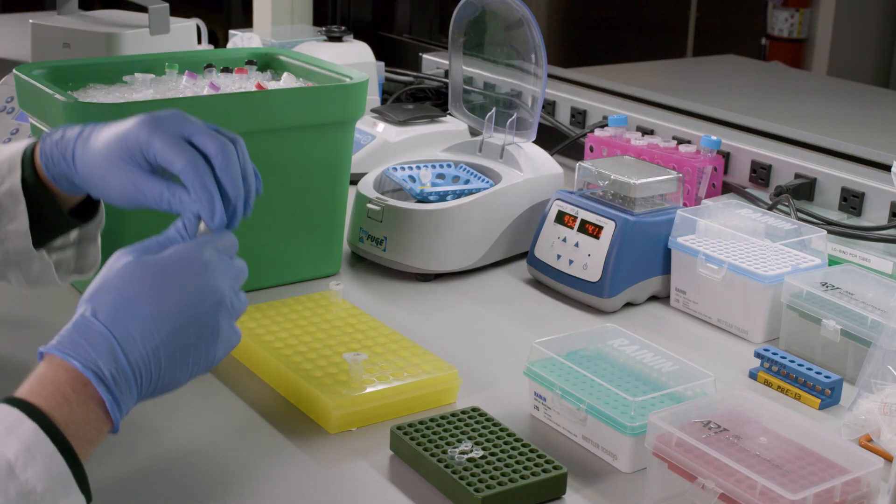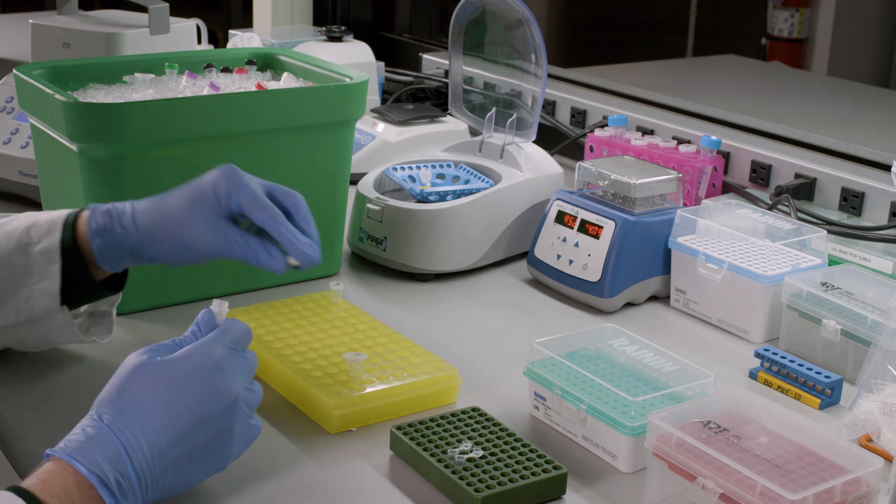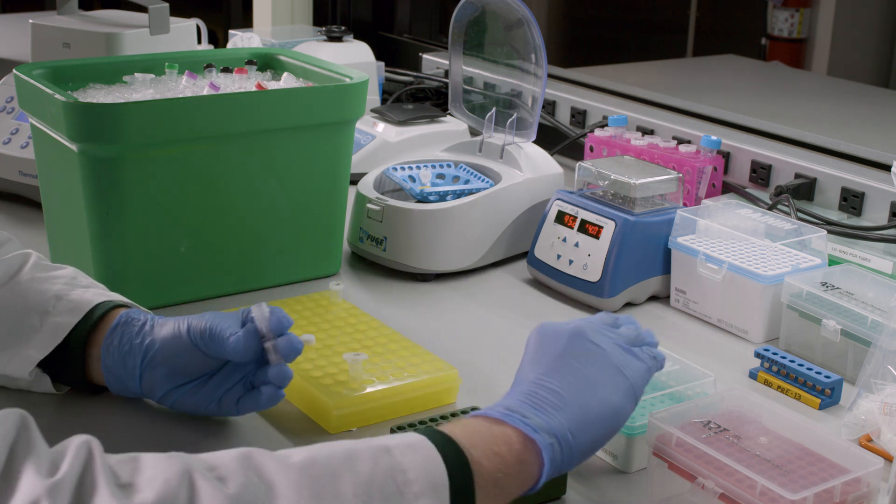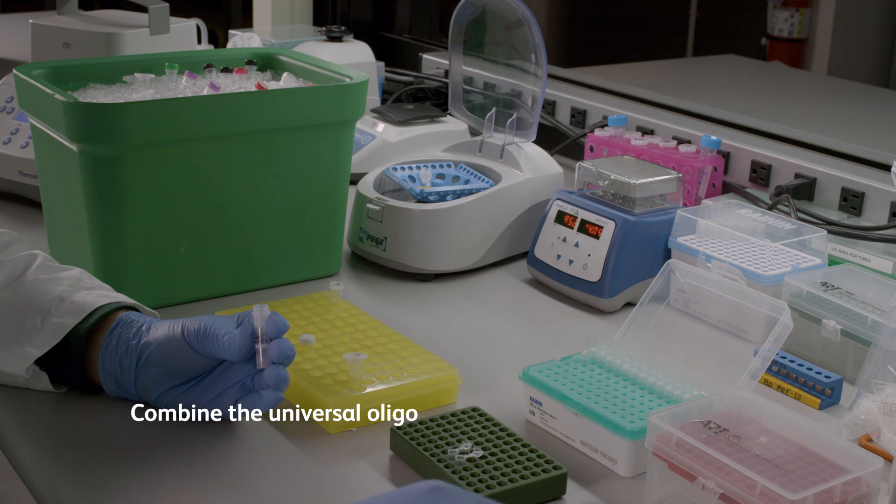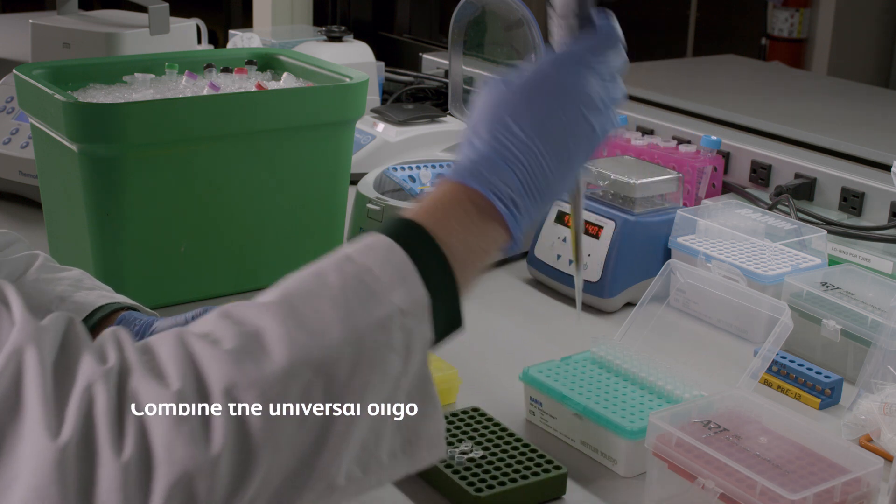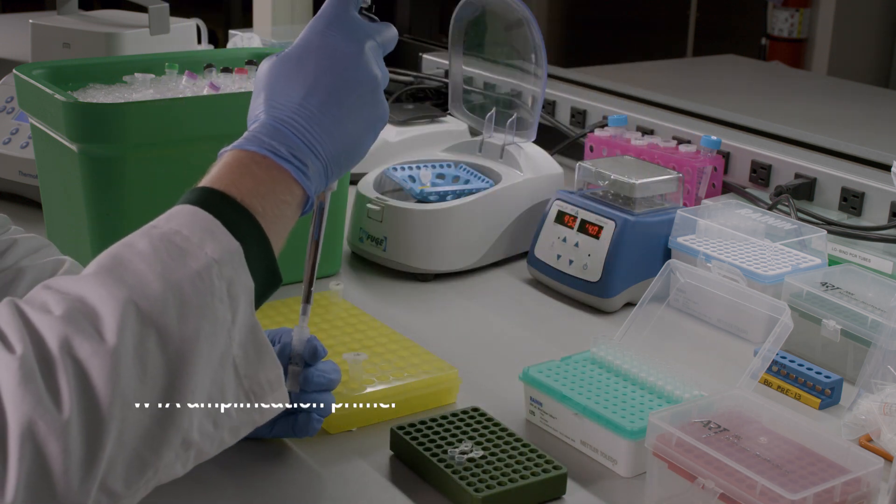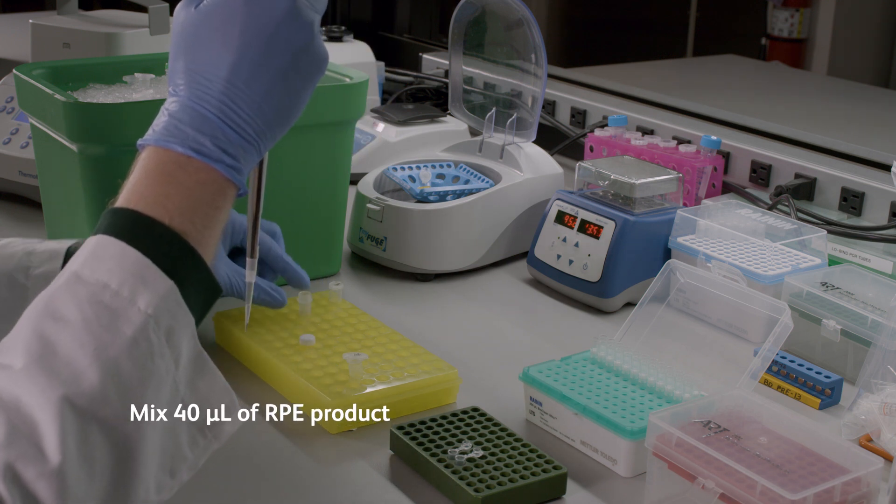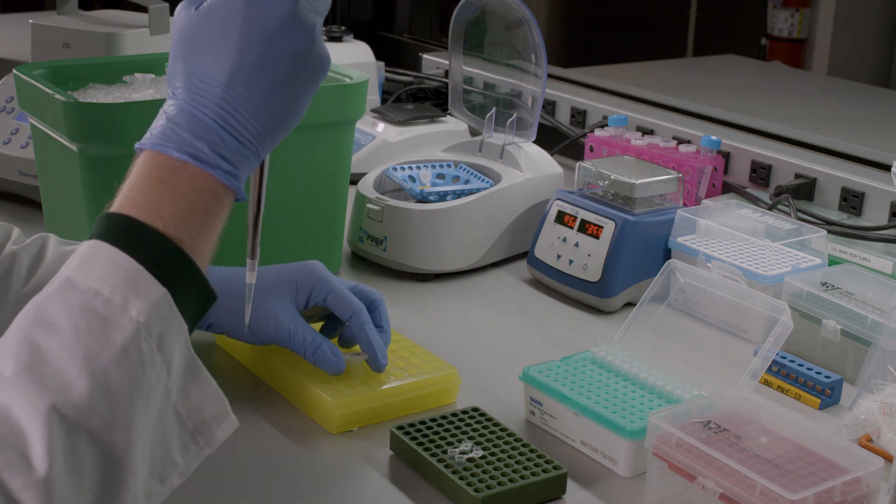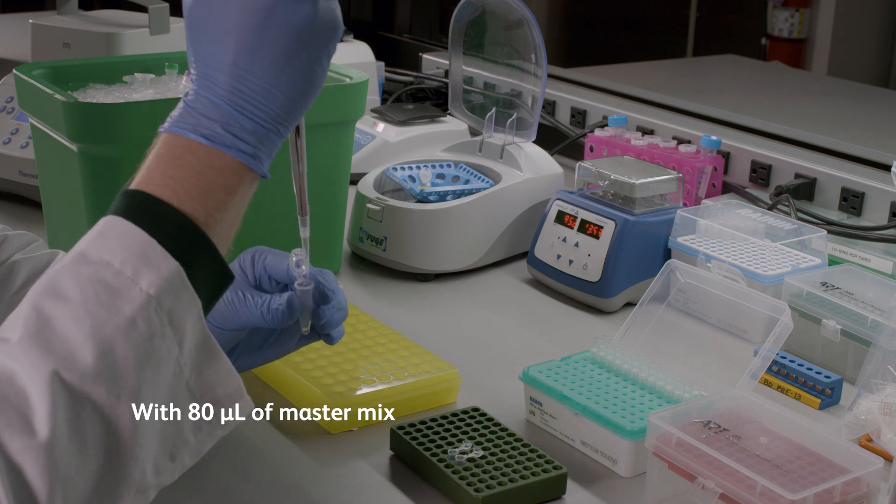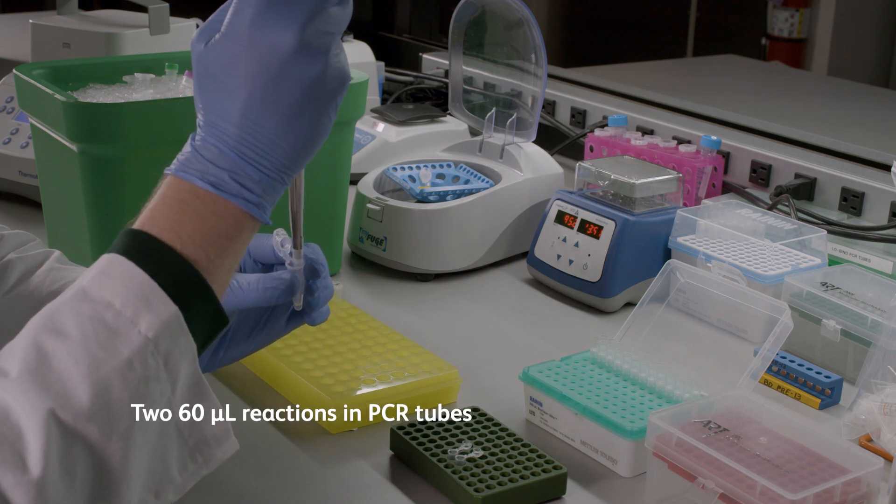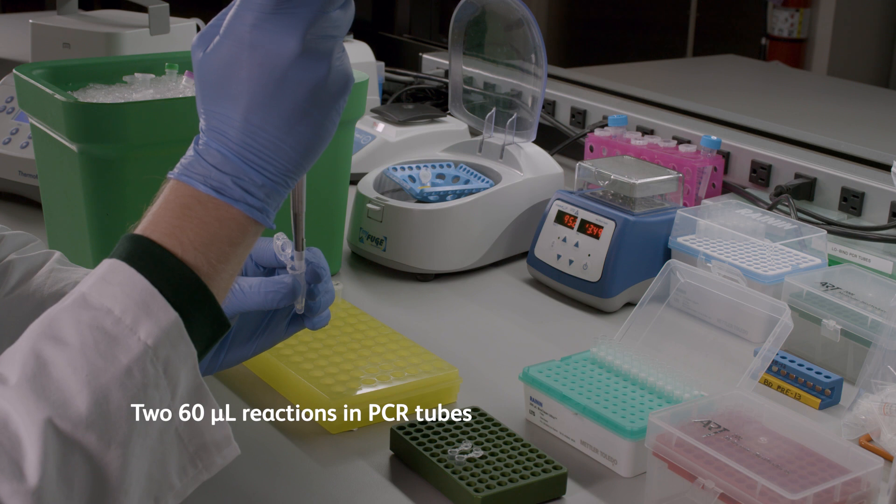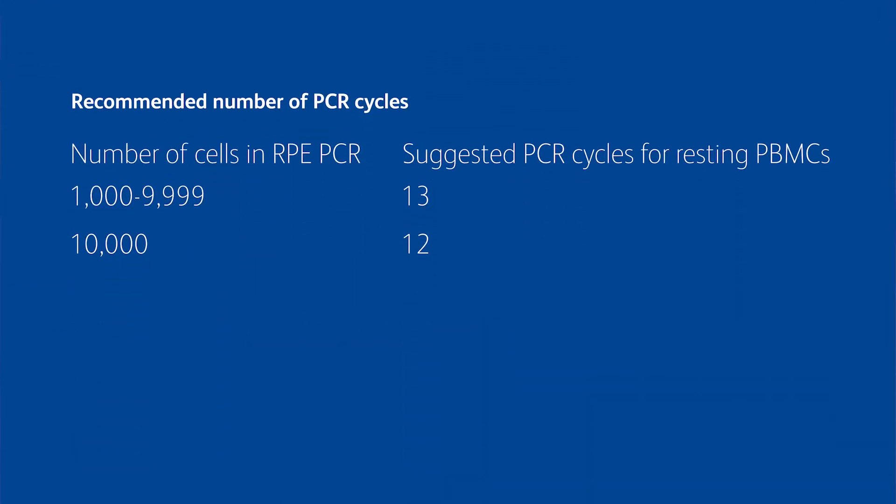After AMPure purification of the combined RPE products, the next step is RPE PCR. Make a master mix by combining the universal oligo, WTA amplification primer, and PCR master mix together. Mix 40 microliters of purified RPE product with 80 microliters of master mix and split into two 60 microliter reactions in PCR tubes. Place the reactions on a thermocycler.